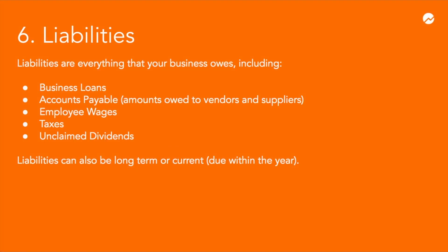Liabilities are the flip side of assets. Liabilities are everything that your business owes to a third party such as a lender, a vendor, or an employee. Examples of liabilities include business loans, accounts payable which are amounts that you owe to vendors and suppliers, salaries that you owe to your employees, taxes that you owe to the government, and unclaimed dividends that you owe to your shareholders. Similar to assets, liabilities can be divided into long-term or fixed liabilities and short-term or current liabilities.